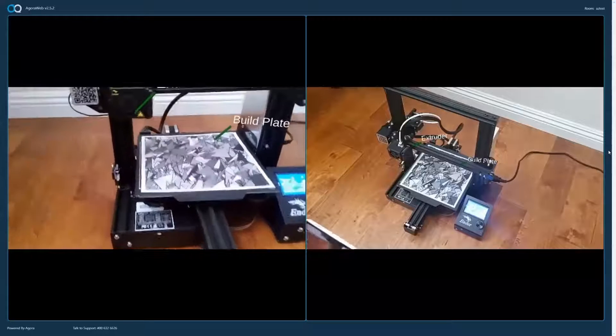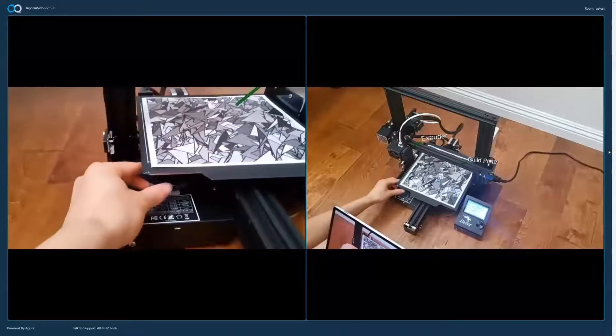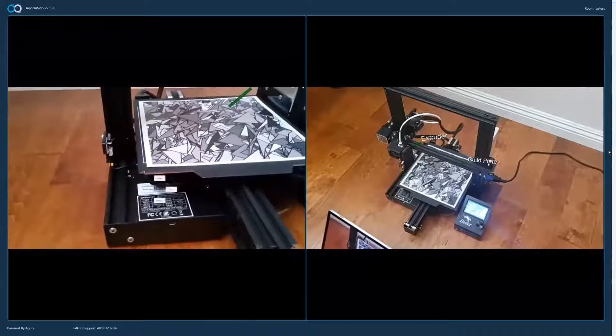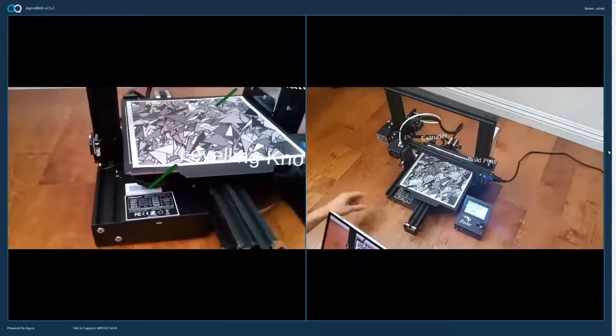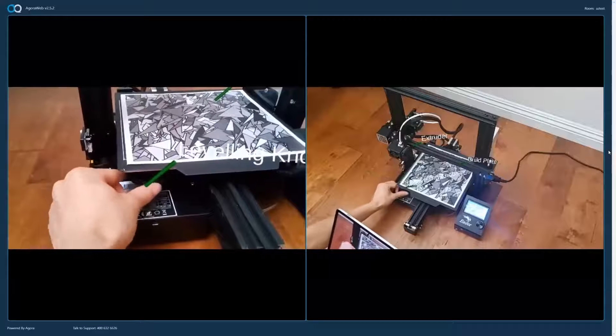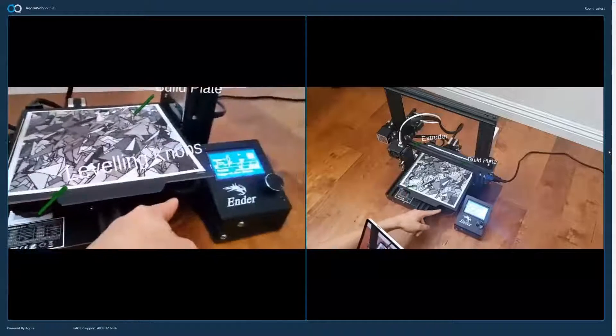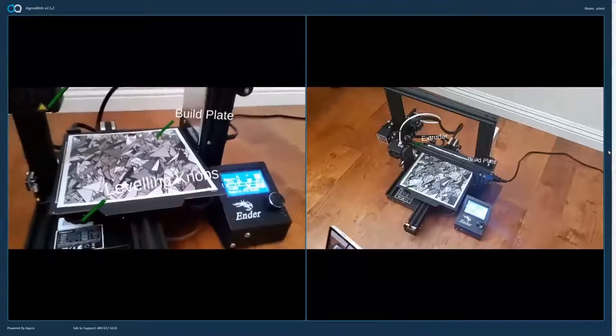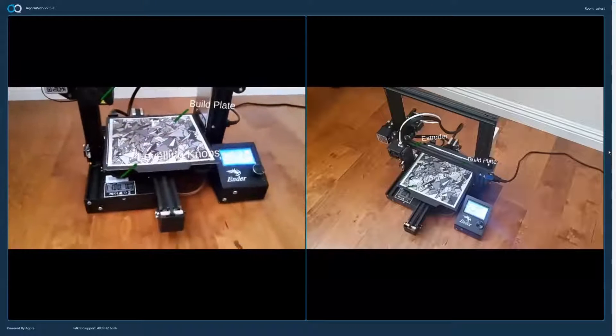In order to have a successful print, the bed needs to be leveled. This can be controlled using the leveling knobs underneath. So you can turn these knobs to adjust the height of the print bed. And there is a leveling knob in each of the four corners of the bed to make sure the entire bed is leveled.